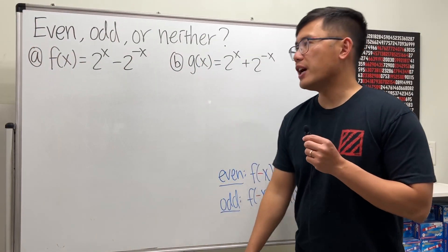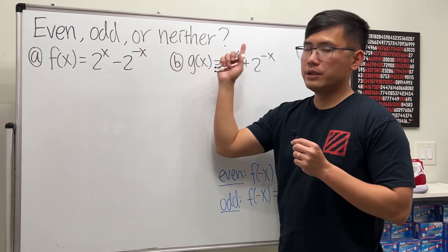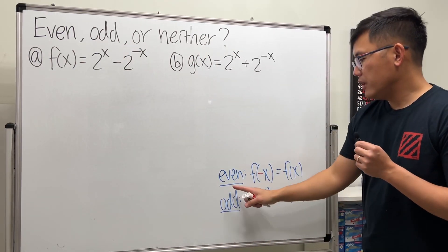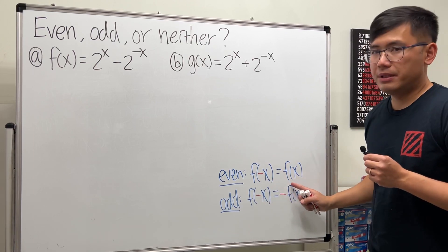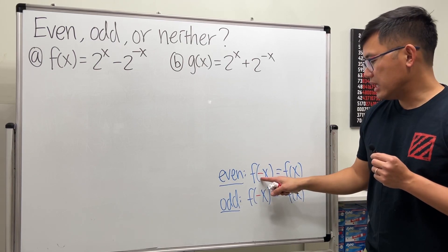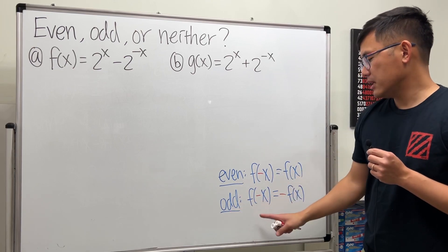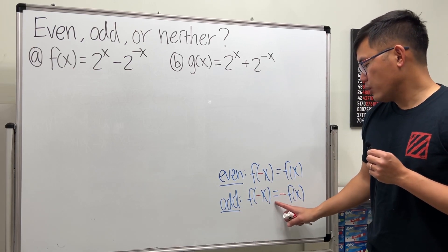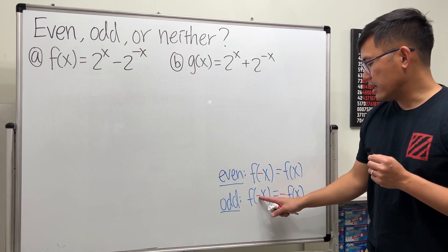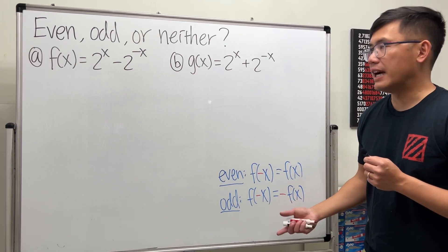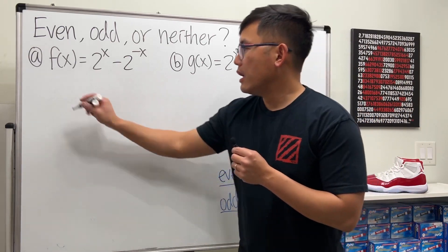We're going to check if the given function is even, odd, or neither. Remember, if a function is even, then f of negative x must equal f of x — the negative inside doesn't matter. If the function is odd, then f of negative x equals negative f of x — the negative can be factored to the outside. Let's get started with the first one.